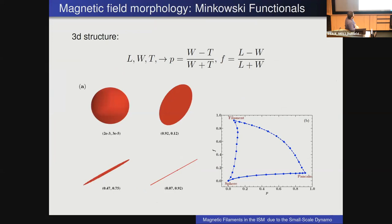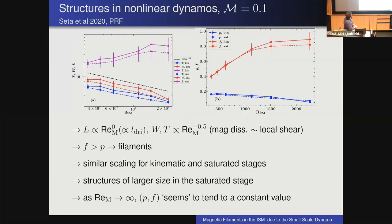The technique we use is the Minkowski functional, originally used by cosmologists to characterize the large-scale structure of the universe. The basic idea is to obtain the length, width, and thickness of structures. For a sphere, length and thickness roughly equal the radius. From these numbers one can construct dimensionless quantities — planarity and filamentarity — to characterize the shape of a structure. A sphere would have very low planarity and filamentarity. A pancake would have very high planarity but low filamentarity. A filament would have very high filamentarity but low planarity. When we apply this to our small-scale dynamo simulation at Mach number 0.1, we find that the length is independent of the resistivity.